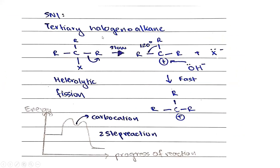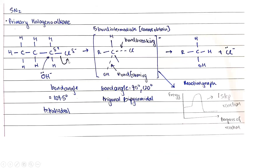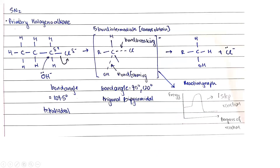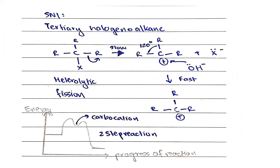The SN1 mechanism is for tertiary halogenoalkanes. With three R groups bonded to the carbon bearing X, heterolytic fission takes place first: the C-X bond breaks and the electrons transfer to X, forming X⁻. This is a slow step and therefore the rate-determining step. That is why for SN1, the rate of reaction depends only on the concentration of the halogenoalkane, not on the concentration of the nucleophile.